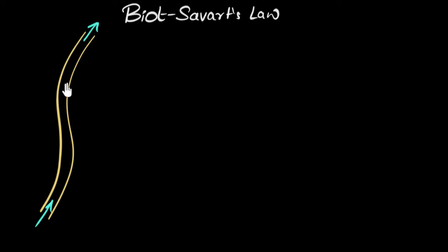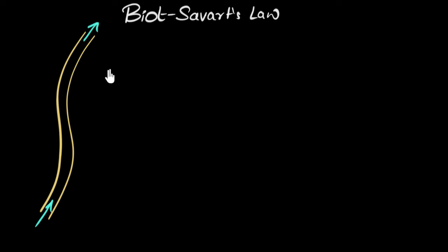We know current-carrying wires produce magnetic fields around them. In this video, let's figure out exactly how to calculate the strength of that magnetic field. It's given by a famous law in magnetism called the Biot-Savart law.